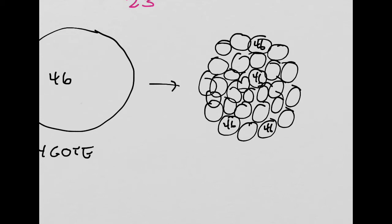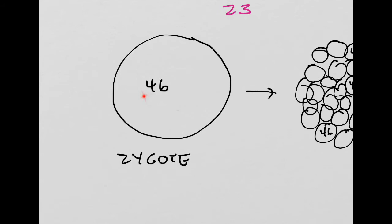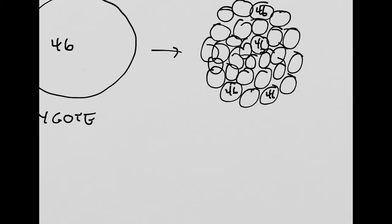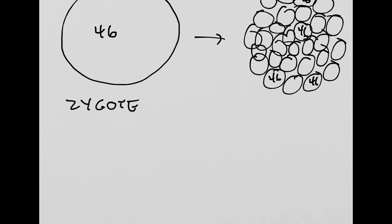Eventually those cells specialize - they turn into brain cells, skin cells, liver cells, intestinal cells, muscle cells, etc. What's vital to understand is that every single cell in your body, since it came from this zygote with its 46 chromosomes, means every single cell in your body right now has 46 chromosomes, except for your red blood cells, which lose their nucleus when they mature.